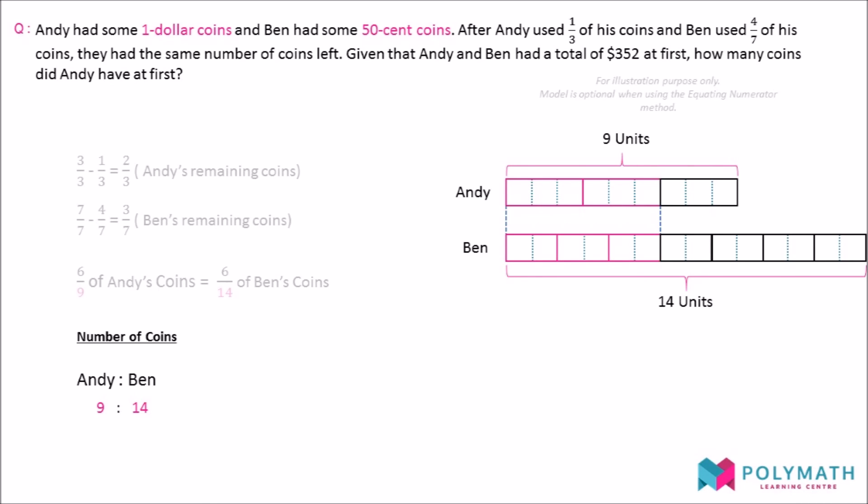We solve this problem by grouping 9 of Andy's $1 coins with 14 of Ben's $0.50 coins. We will get a value of $16 for each group that we group this way.